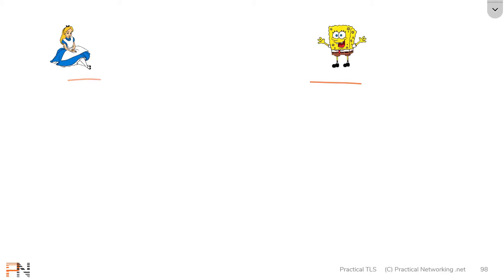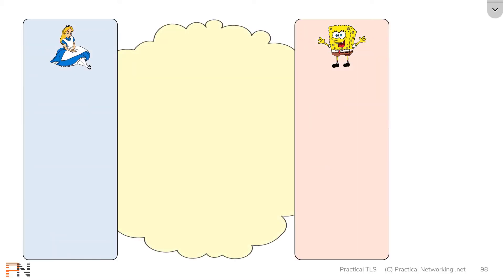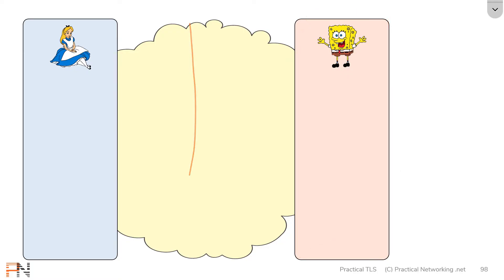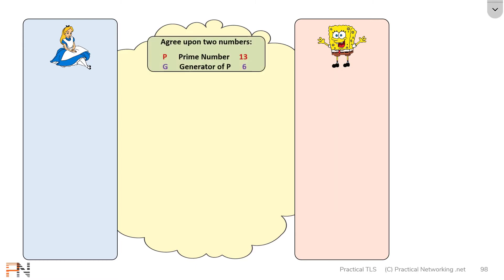So let me show you how that works with an example. We're going to do Diffie-Hellman together using Alice and Bob. All the math that Alice is going to do will be in the blue box, and all the math that Bob is going to do will be in the orange box. Anything that happens in the middle, everybody knows about — it may have been heard by anyone listening on the wire. First they're going to agree upon two numbers: a prime number and a generator of that prime number. For our example we're going to use 13 as our prime and 6 as our generator, calling these values p and g.